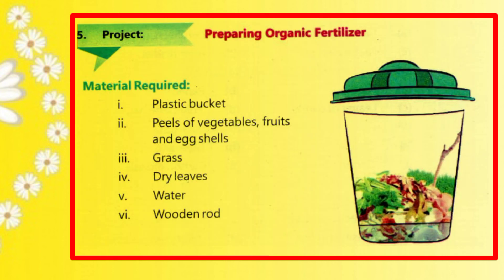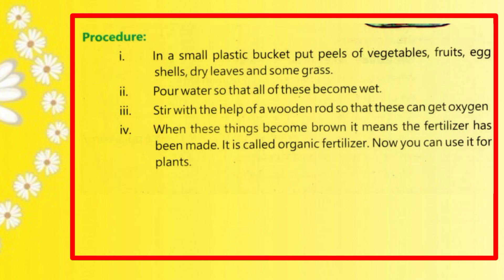Project — Materials required: plastic bucket, peels of vegetables, fruit and egg shells, grass, dry leaves, water, and a wooden rod. Procedure: In a small plastic bucket, put peels of vegetables, fruit, egg shells, dry leaves, and some grass.